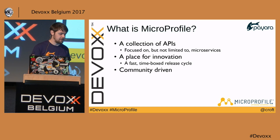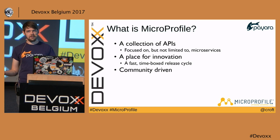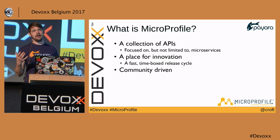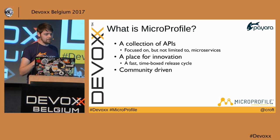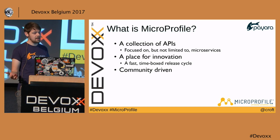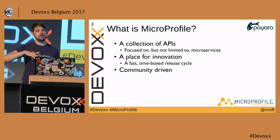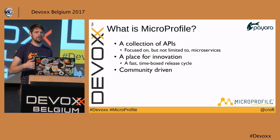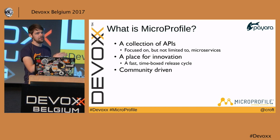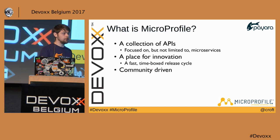MicroProfile at its heart is a collection of APIs, in the same way that Java EE is a collection of APIs. It is focused on — but far from limited to — microservices. It's a place for innovation: one of the main criticisms of Java and Java EE is that it's slow to innovate, so MicroProfile is a place to try new things and push them into a more stable supported platform.